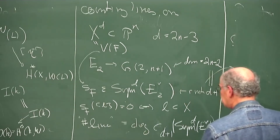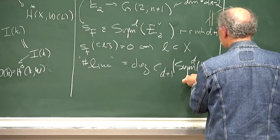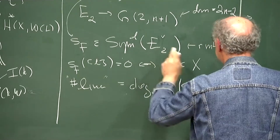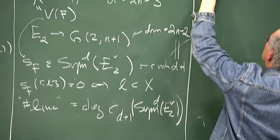You can compute such a thing by figuring out what this top Chern class is in terms of the first and second Chern class of the bundle, then using the Schubert calculus. Since I'm rapidly running out of time, let me not do that calculation, but let's do the analog — the quadratic count — in a little more detail.